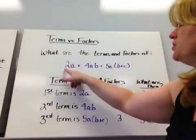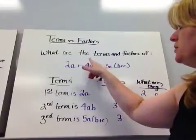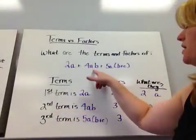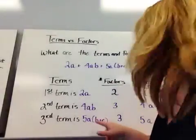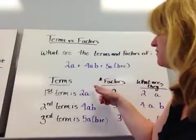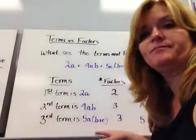The first term is 2a, which is separated. This is a term. The second term is 4ab, and the third term is 5a(b plus c). So I have three terms here, one, two, three.